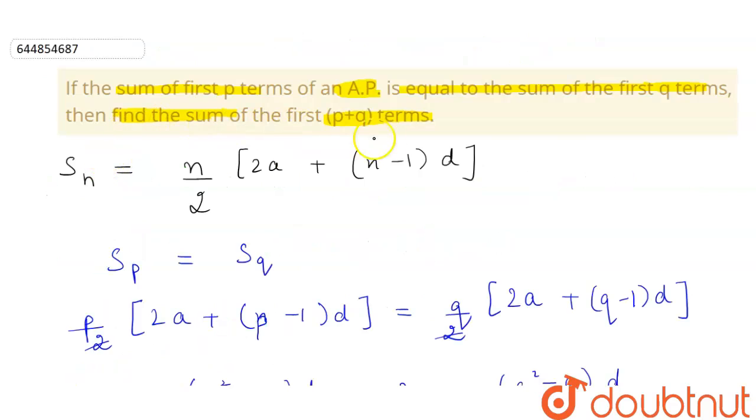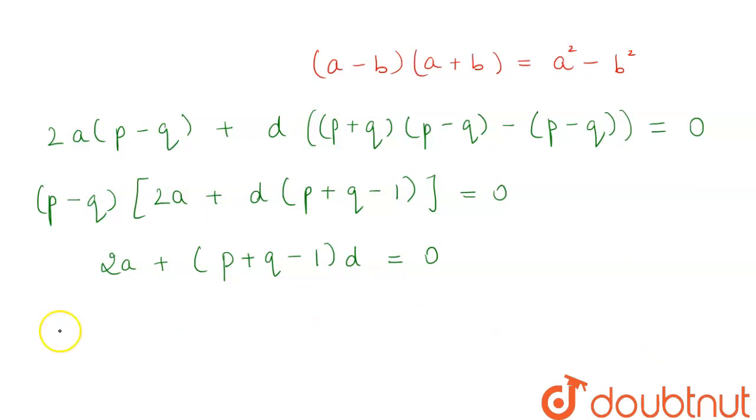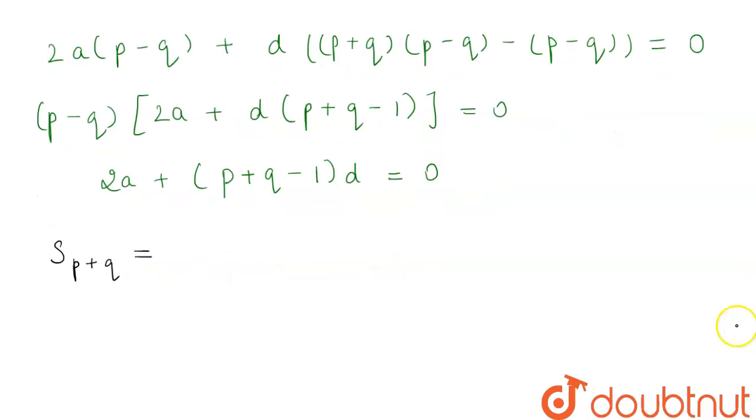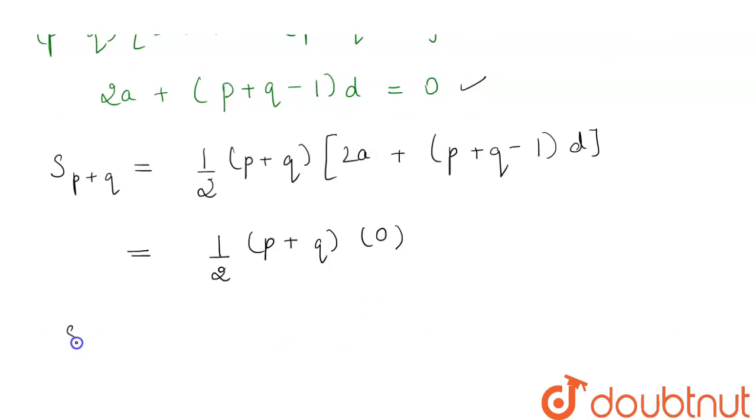Now we have to find the sum of P plus Q terms. So, we can put the value of N to be P plus Q. Sum of P plus Q terms will be equal to 1 by 2 into N which is P plus Q into 2A plus, here N is P plus Q minus 1 into D. Now, we see that the value of 2A plus P plus Q minus 1 into D is equal to 0 from this. So, this will be equal to 1 by 2 into P plus Q into 0. Therefore, the value of sum of P plus Q will be equal to 0. This is our required answer.